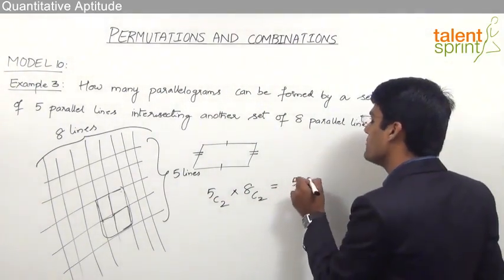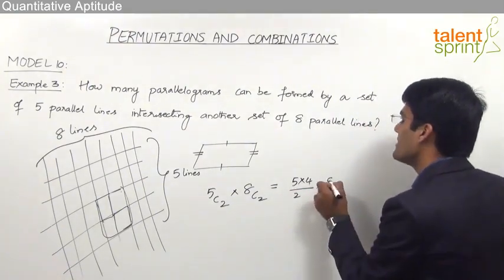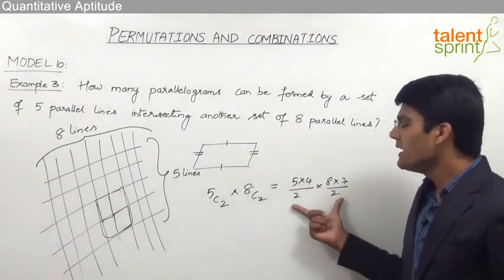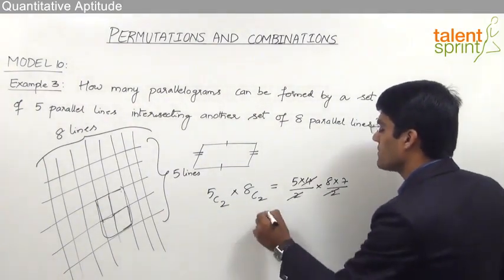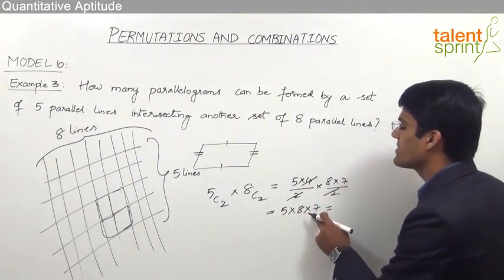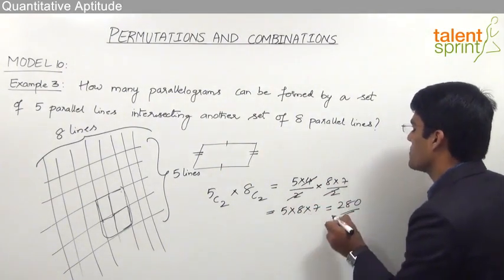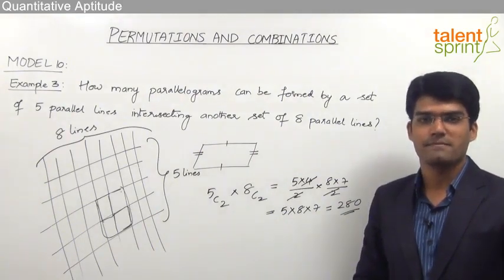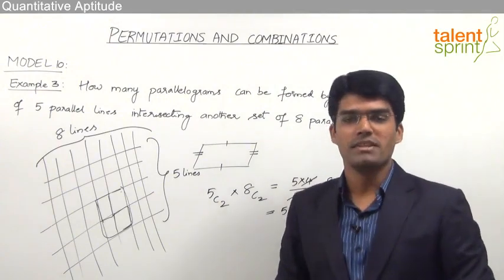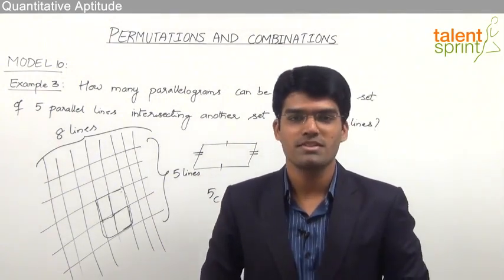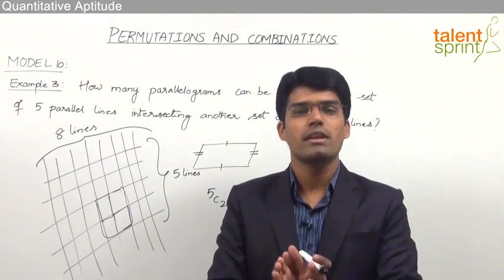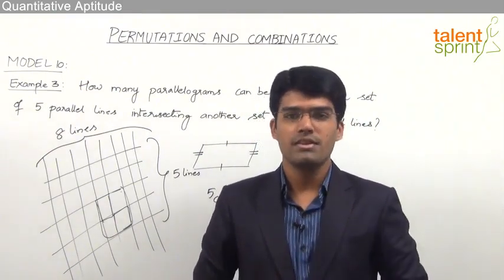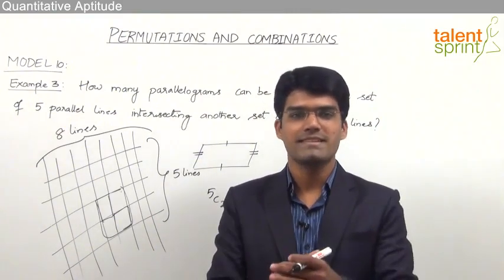5C2 = 5 × 4 / 2 and 8C2 = 8 × 7 / 2. The two 2s cancel with 4, giving 5 × 8 × 7 = 5 × 56 = 280. So there will be 280 parallelograms formed with a set of 5 parallel lines intersecting another set of 8 parallel lines. That's all from permutations and combinations — decide arrangement versus selection, apply NPR or NCR, and get the answer. Thank you.